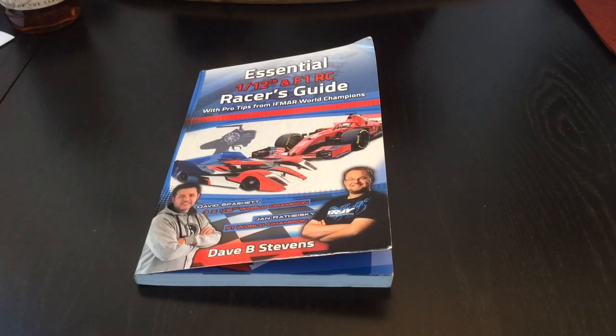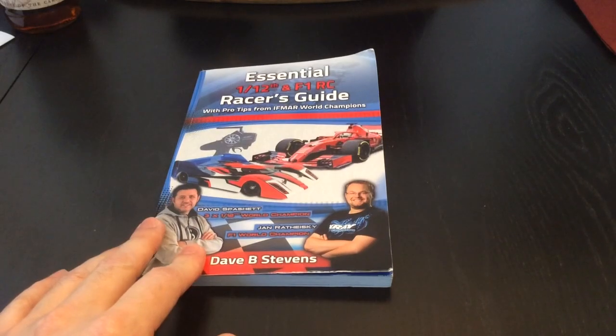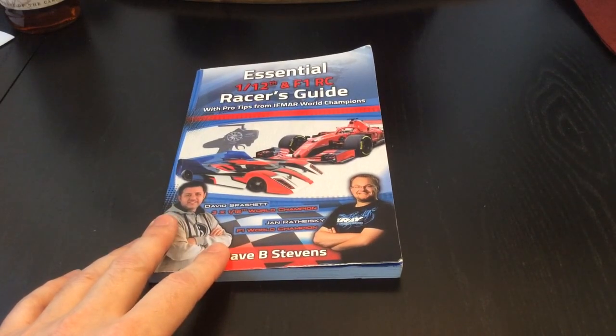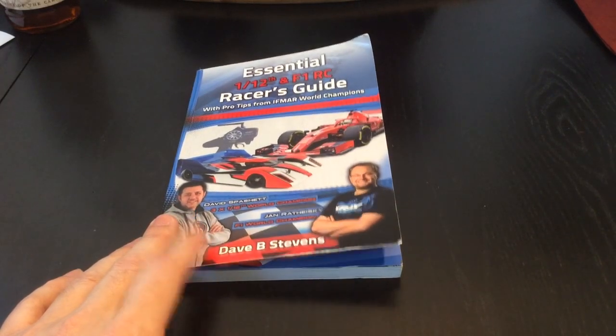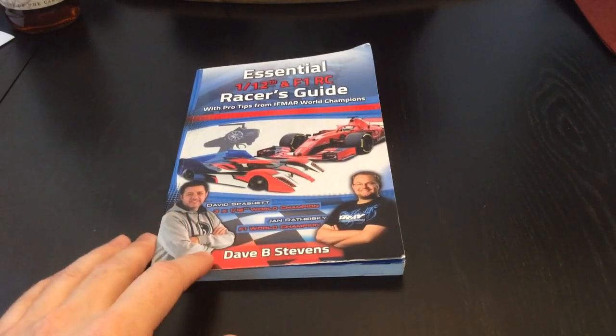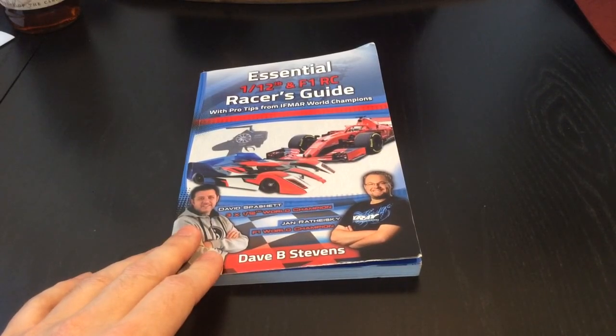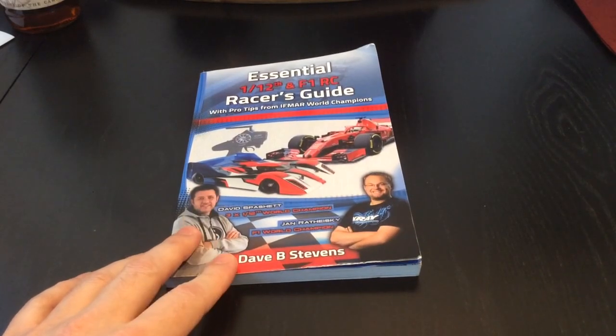So during this downtime we can easily work on our cars, maintaining them and preparing for the next time we go out. But for those who are interested, there is a racer's guide for 1/12 scale and F1 by Dave Stevens. If you're looking to pick up an extra edge when it comes to setup information and knowledge, this book is something that you should consider. Dave was nice enough to send me this book in December of 2019.